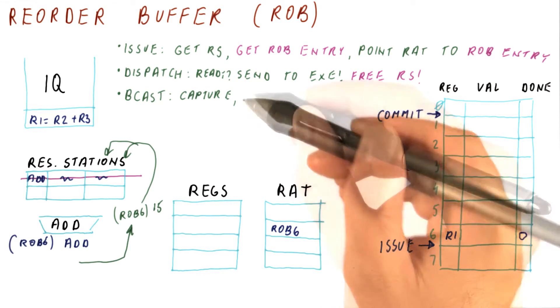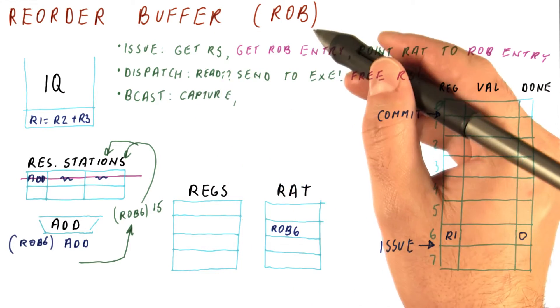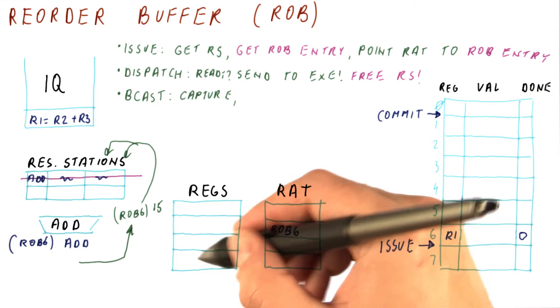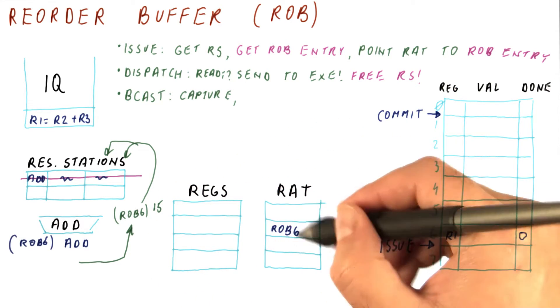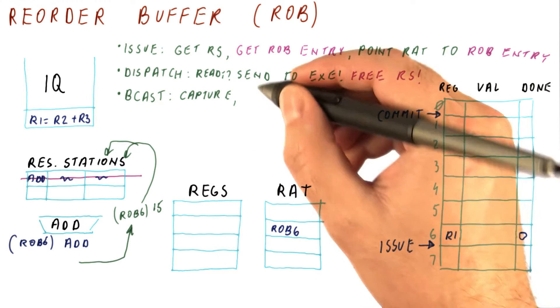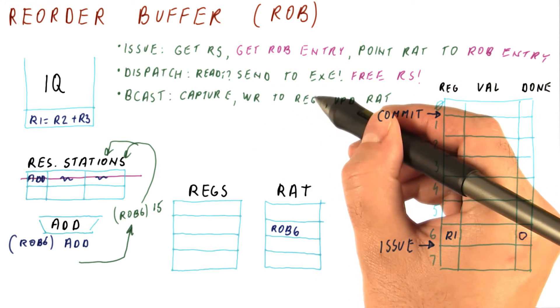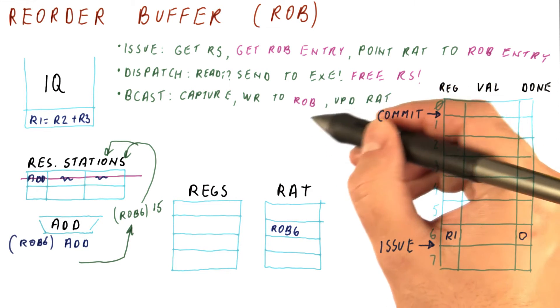So this is not changed. Without the ROB, we would now also capture this result in the register and update the RAT to point to that register. With the ROB, we don't want to write to the register yet, so we write to the ROB instead.